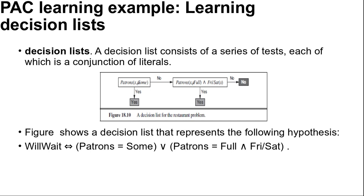So let's start with decision lists. We know how to apply PAC learning to an application space. A decision list consists of a series of tests, and each of these is a conjunction of literals. If a test succeeds when applied to an example, the decision list specifies the value to return. If the test fails, processing continues with the next test in the list. A decision list resembles a decision tree, but their overall structure is simpler. They branch only in one direction. You can see here in the picture the decision list for the restaurant problem. In contrast, the individual tests are more complex.